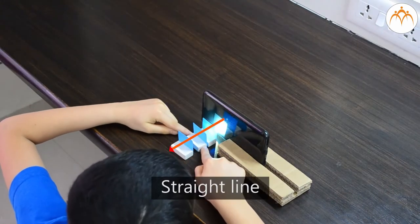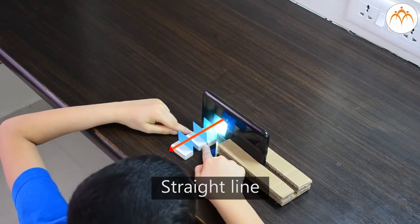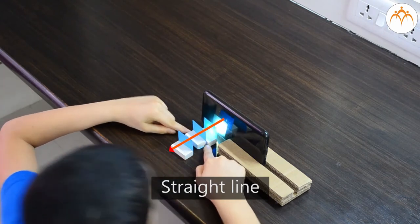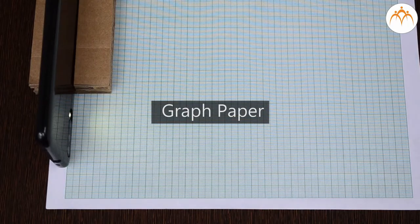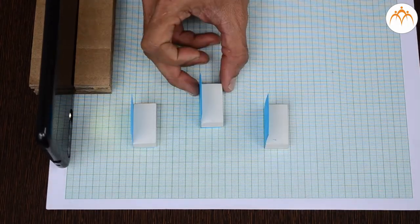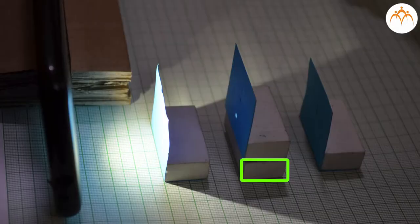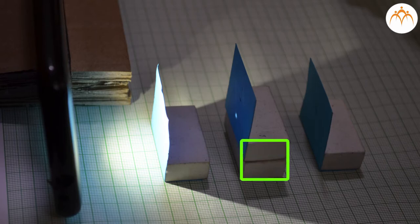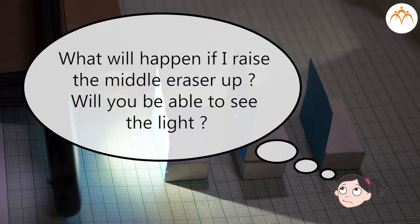We found out that light is visible only when all the holes are aligned in a straight line. To check if all the holes are in a straight line, you can use graph paper as well. What will happen if I raise the middle eraser up? Will you be able to see the light?